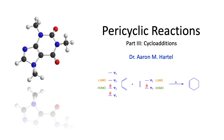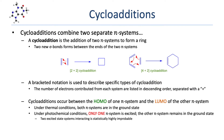In this lesson, we continue our exploration of pericyclic reactions, covering the fundamentals of cycloadditions and an in-depth look at the Diels-Alder reaction. Cycloadditions are probably the most important pericyclic reactions and are used extensively throughout organic synthesis. A pericyclic cycloaddition is the combination of two separate pi systems to form a ring. A bracketed notation is used to describe the cycloaddition based on the number of electrons involved. The numbers of electrons contributed by each pi system are listed in descending order, separated by a plus symbol.